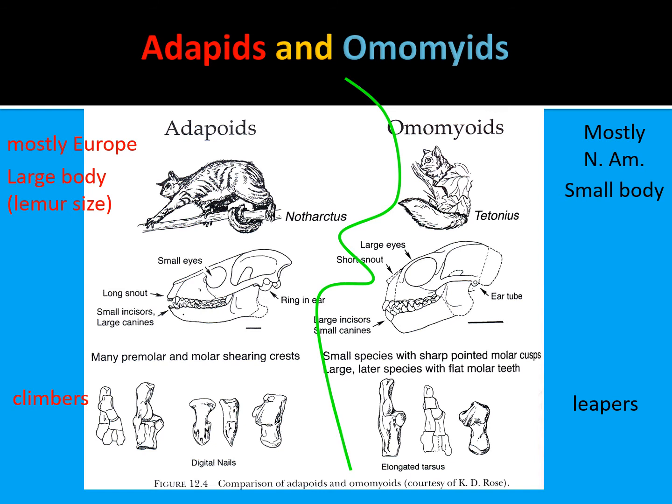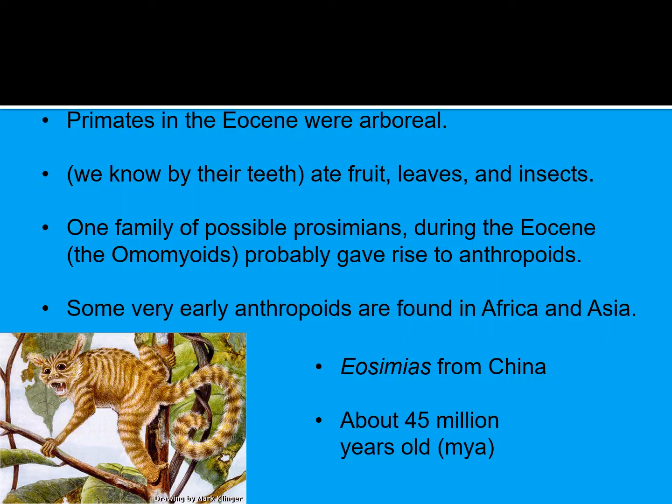The euprimates can be broken down into two generalized groups: the Omomyids and the Adapids. Looking at examples like Shoshonius and Notharctus — Notharctus looks very similar to what we see in lemurs in Madagascar, while Shoshonius with a few changes may have given rise to some of our first monkeys. Adapids are mostly found in Europe, large-bodied around lemur size, and very good climbers. Omomyids are mostly North American, very small-bodied, and are leapers. One family, the Omomyids, probably gave rise to the Anthropoids. Very early anthropoids like Eosimias are found in China at around 45 million years ago.